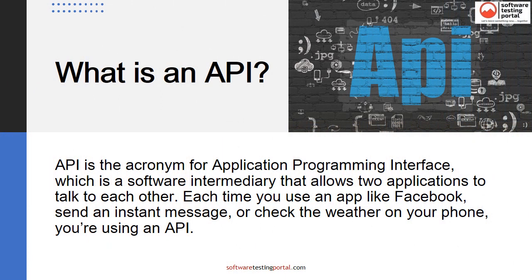API is the acronym for Application Programming Interface, which is a software intermediary that allows two applications to talk to each other. Each time you use an app like Facebook, send an instant message, or check the weather on your phone, you're using an API. An API at its core is a formal specification that acts as a guaranteed contract between two separate pieces of software.